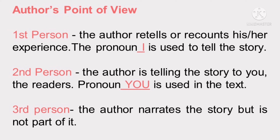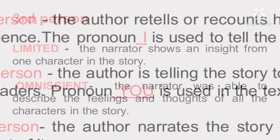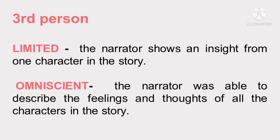In second person, the author is telling the story to you, the readers, and the pronoun "you" is used in the text. In third person, the author narrates the story but is not part of it. Under third person, we have limited and omniscient. Limited means the narrator shows insight from only one character in the story. Omniscient means the narrator was able to describe the feelings and thoughts of all the characters in the story.